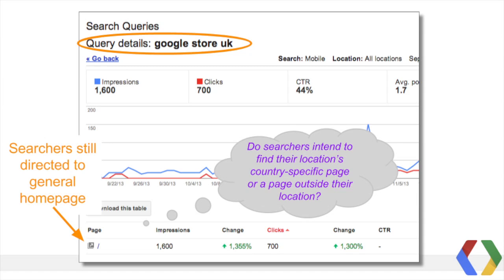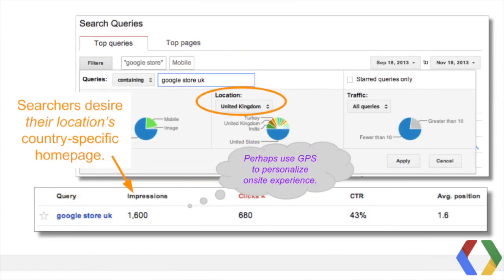Still in the search queries feature, filter queries containing Google Store and keep the search restricted to mobile. The filtered results show geo-based intent to find country-specific homepages. Clicking on the query Google Store UK displays that the page served in search results is still the general Google Store homepage at www.googlestore.com — this is clicked over 40% of the time, even though the Google Store has a specific UK homepage. A question to ask is: do searchers intend to find their location's country-specific page, or are they desiring to find a page outside their location? To figure this out, I'll filter by Google Store UK on mobile with the location limited to the United Kingdom.